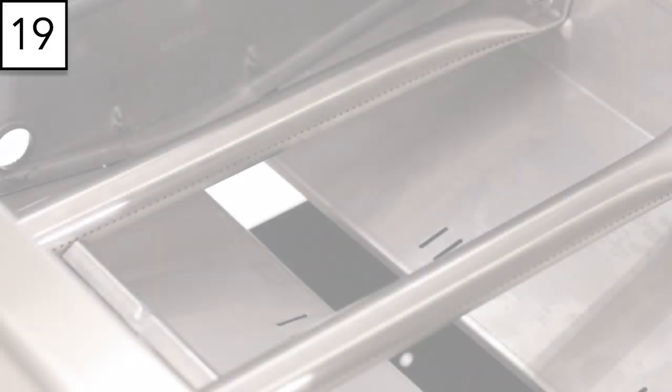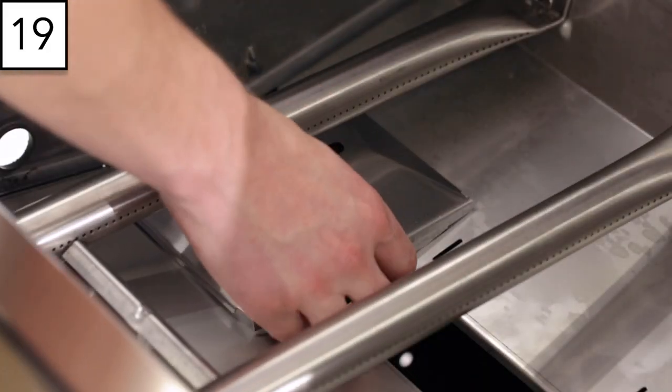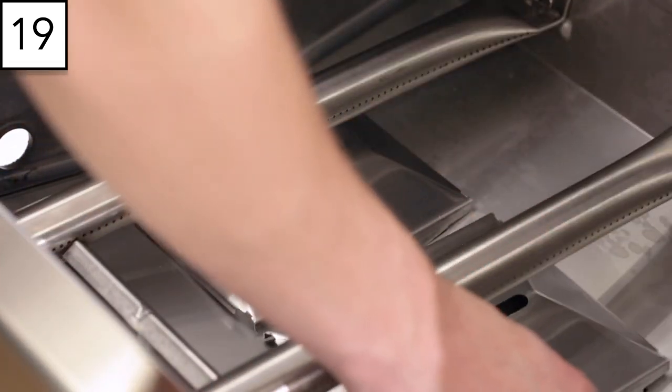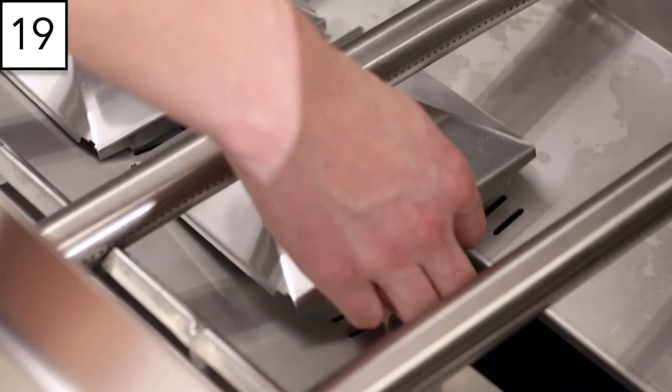Step 19: Install the grease shields into the bottom of the cook box, fitting the tabs on the shields into the corresponding slots.